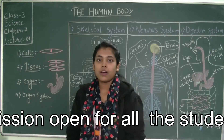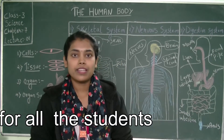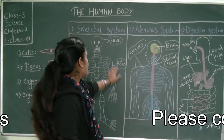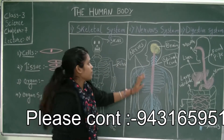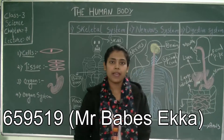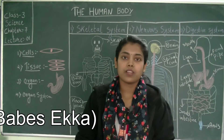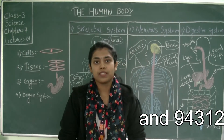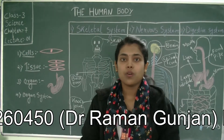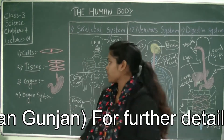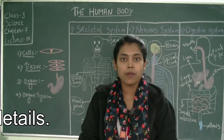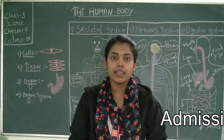The organs together combine and give rise to a proper organ system. The organ system consists of various different parts of the body — for example, the skeletal system, the nervous system, the digestive system, and many more like the circulatory system, respiratory system, and excretory system. So all of these come under the organ system, and we will be dealing with each one accordingly.